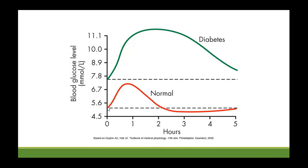This is how it will look. In a normal person, the fasting level is, say, below 5.5 or so. It will go up and then after two hours it is already below the baseline. In a diabetic, the fasting level is higher to begin with. When you give the oral glucose challenge, the glucose level shoots up and after two hours it is still above 11.1. It may come down gradually, but after two hours it is quite high.